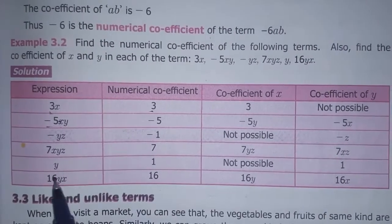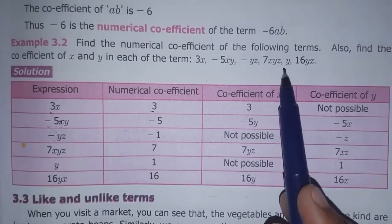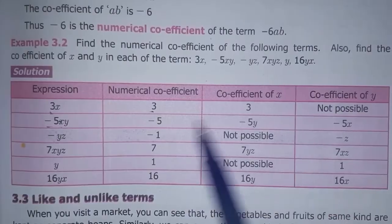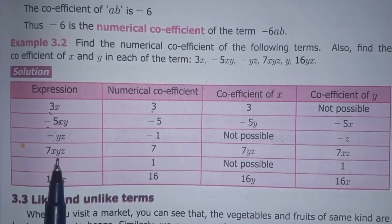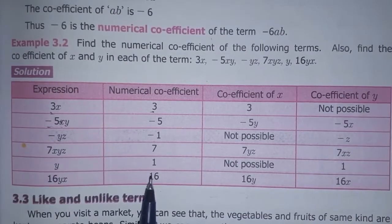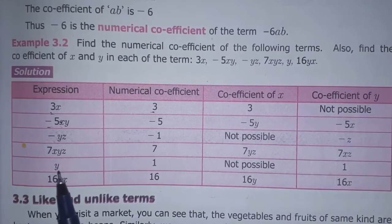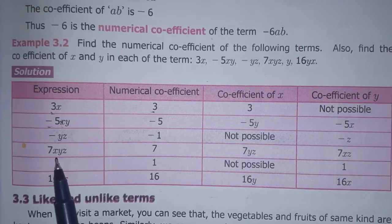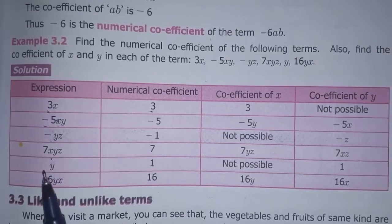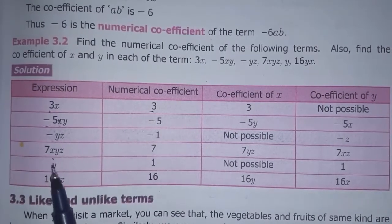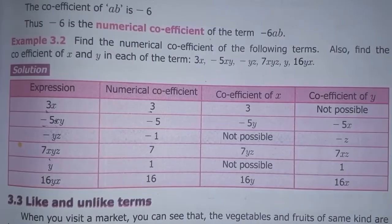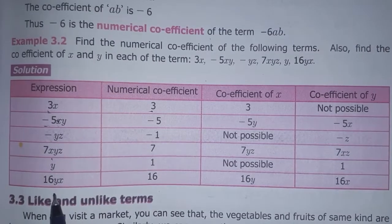For y: numerical coefficient — the variable is just y, so the number is 1. Coefficient of x — x is not present. Coefficient of y is 1, since 1 is multiplied.